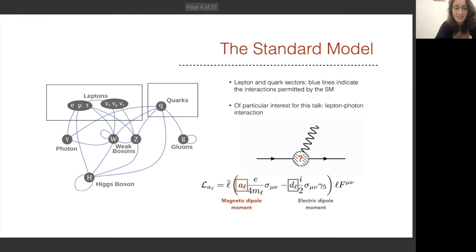So let's start with the puzzle. The standard model shows two distinct fermionic sectors, the leptons and the quarks. Then there are of course the gauge bosons and the Higgs, and these blue lines here represent the allowed interactions within the standard model framework. Of particular interest for this talk will be the lepton-photon interaction that can be represented by this effective vertex. Imagine that these fermion lines here are a particular lepton, and this line here represents the photon.